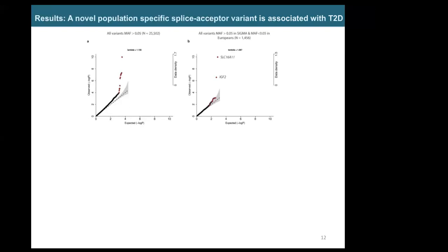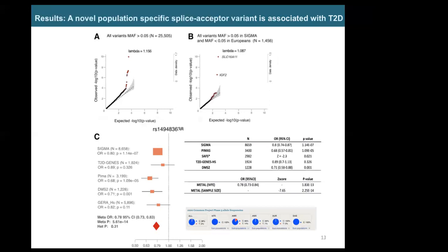In the QQ plot showing these population-specific variants, two variants are highlighted: one is SLC16A11, which had already been published, and the other is located in IGF2. This IGF2 variant had a p-value of 10^-7 and was exome-wide significant, so we attempted to replicate it. Replication was successful in the T2T Genes project, FEMA, Native Americans, and the GERA cohort. Overall, this variant showed an odds ratio of 0.8 and p-value of 10^-14, a robust association.